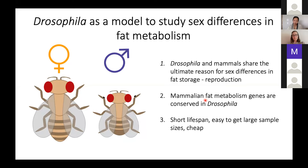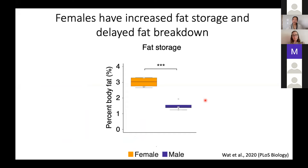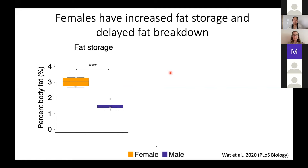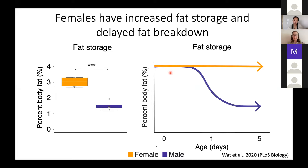To find genes and pathways responsible for regulating the sex difference in fat metabolism, we needed a genetically tractable model organism suitable for genetic screens. We chose Drosophila. Drosophila and mammals share the same ultimate reason for sex differences in fat storage — reproduction — and fat metabolism genes in mammals are all conserved in Drosophila. Drosophila also have a short lifespan, are highly reproductive, and relatively cheap, meaning we can run experiments with high sample sizes in little time and for little money.